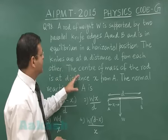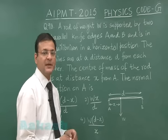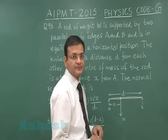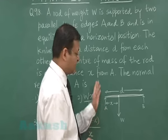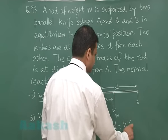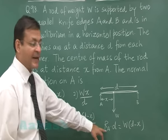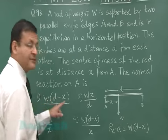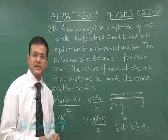Now they want that the normal reaction on A is that normal reaction offered by A. So what you can simply do? You can balance the torque about point B. The forces which will be applying torque they will be W and the reaction force A. So this reaction force A multiplied by this entire distance D, this will be the torque due to weight that is W into D minus X and for that matter the most appropriate answer for RA that will be the first option and that is the answer to question 98. Now let us move on to question 99.